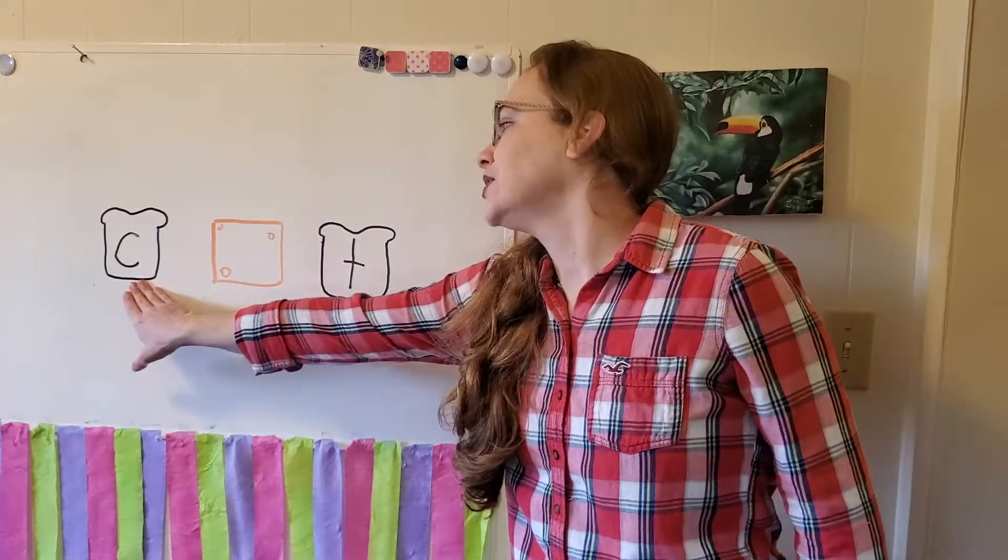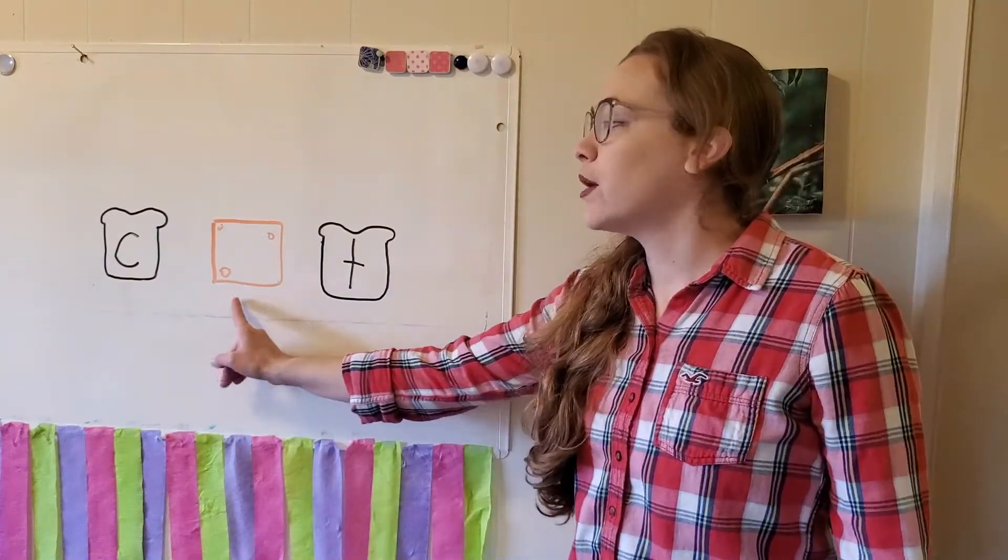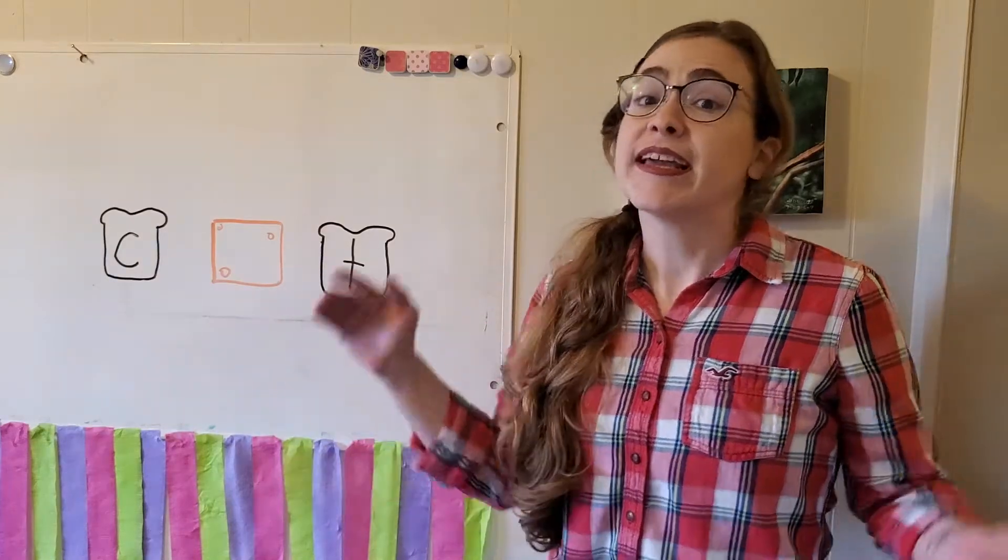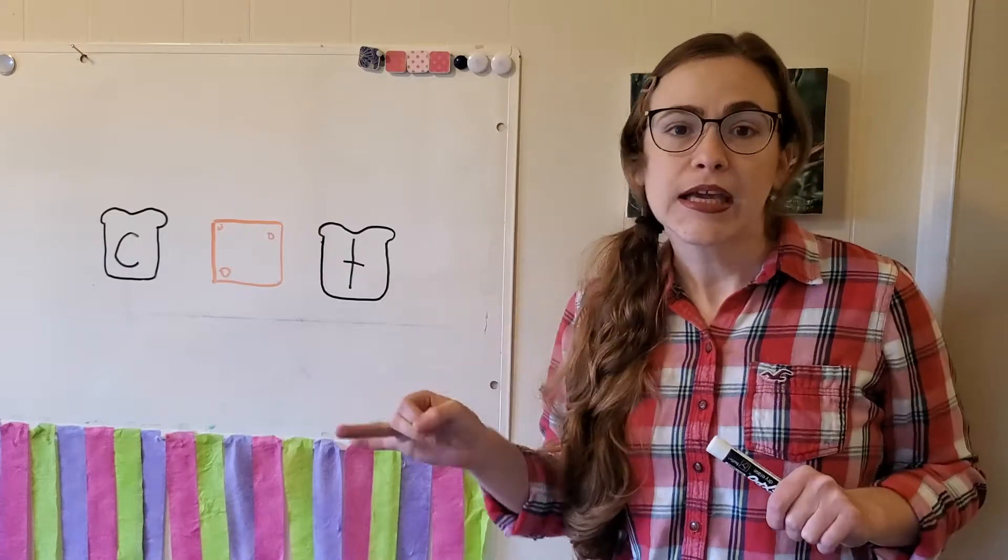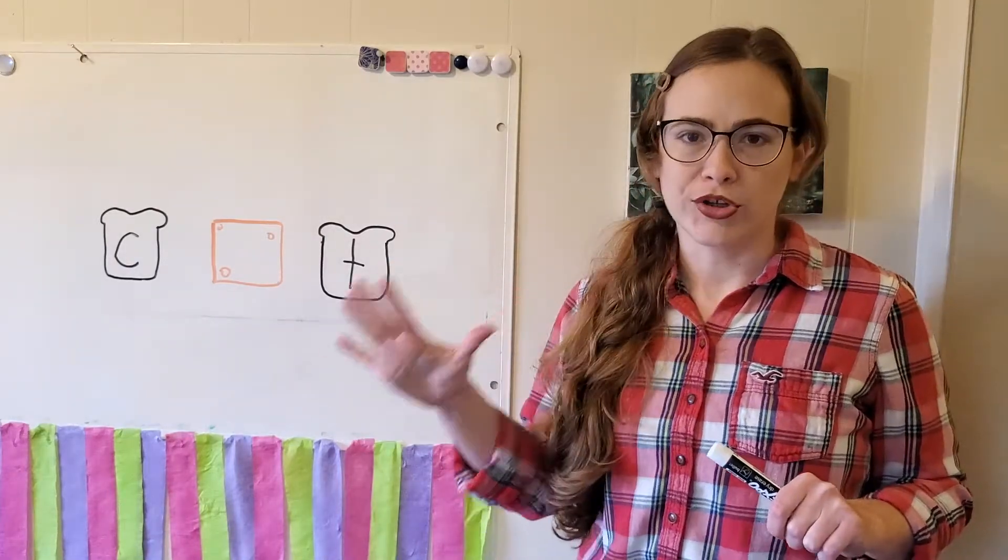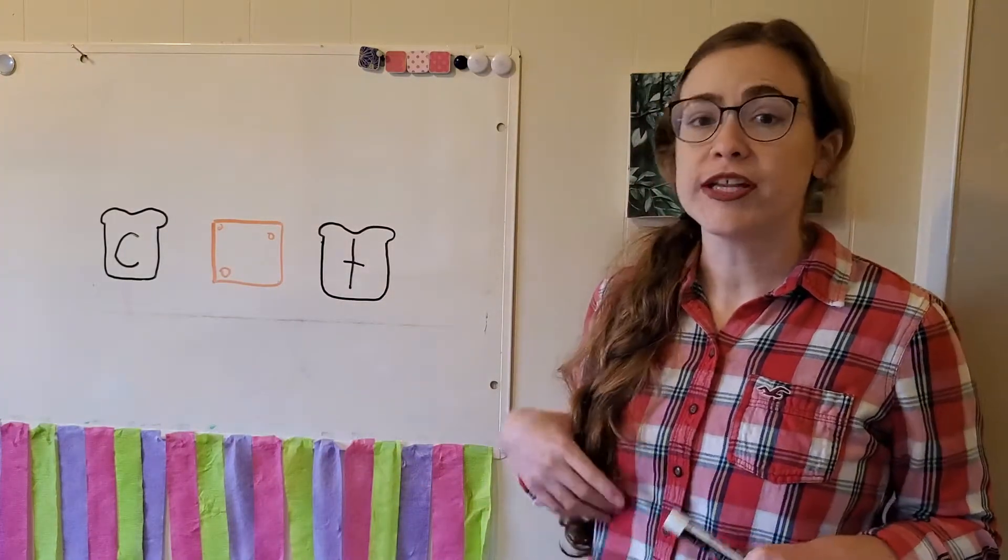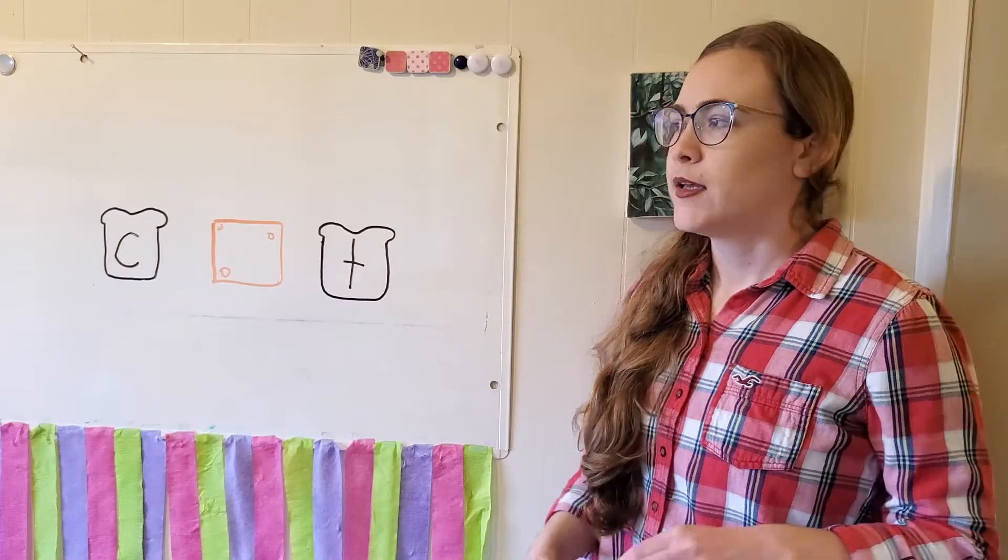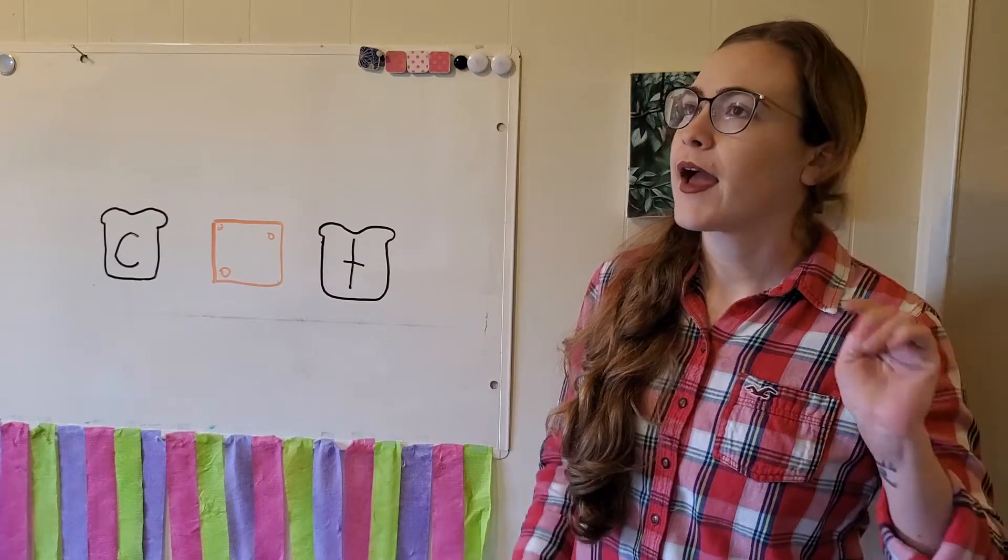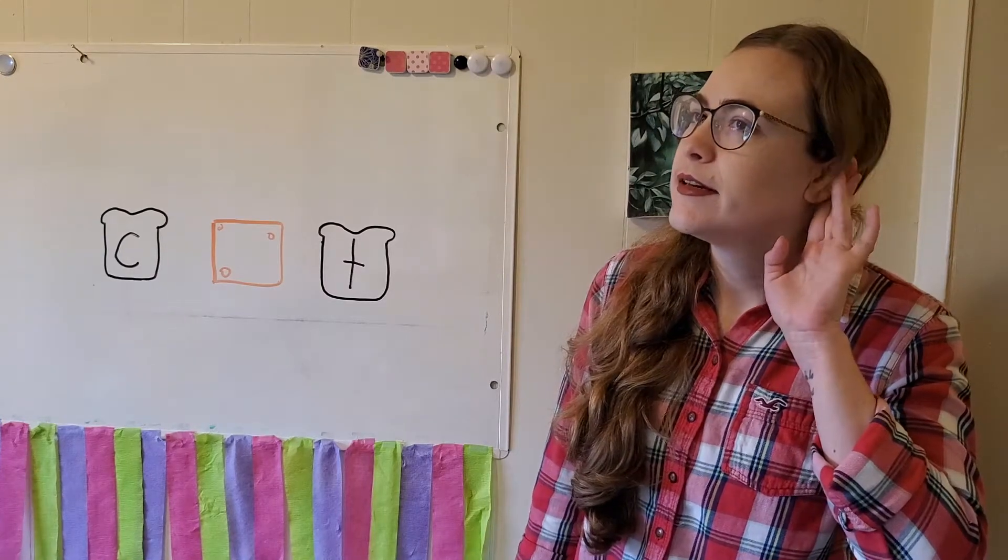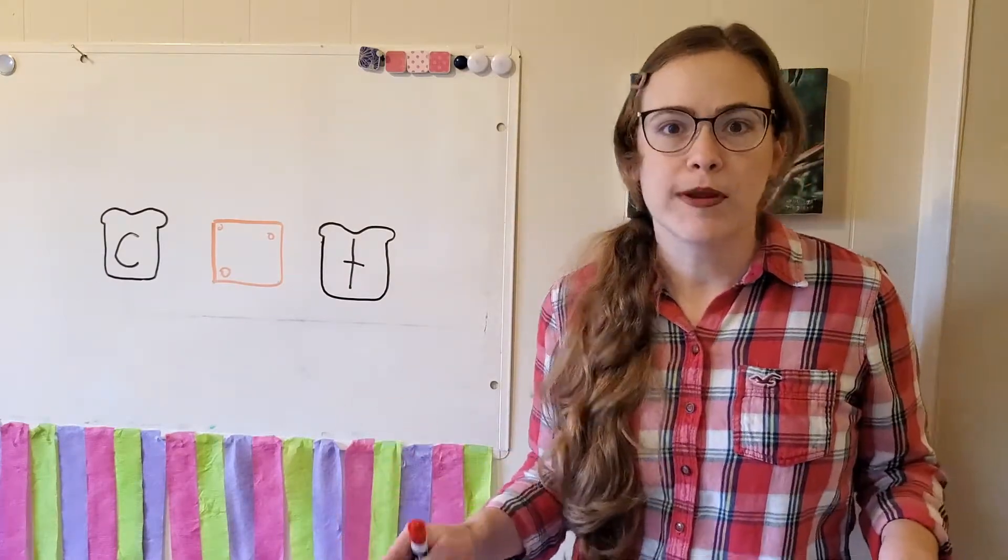All right, friends. We have the beginning sound and the end sound. Now, we need to find the sound in the middle, the cheese sound. It's going to have to be a vowel. So, that's either A, E, I, O, or U. Now, let's listen to the word cat and see which sound we hear. Hmm. I'm having a little bit of trouble. Let's try breaking it down on our arm.